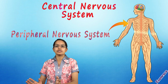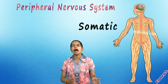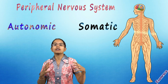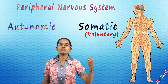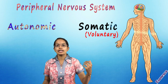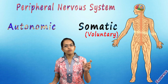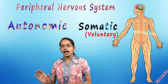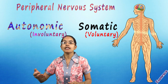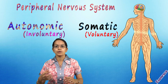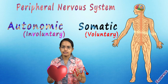The peripheral nervous system is subdivided into two sections: the somatic nervous system and the autonomic nervous system. Somatic means voluntary — unless I want my hand to move, it won't. It is totally under my control. The autonomic nervous system, on the other hand, is involuntary and not in your control. For example, the beating of the heart is controlled by the autonomic nervous system.